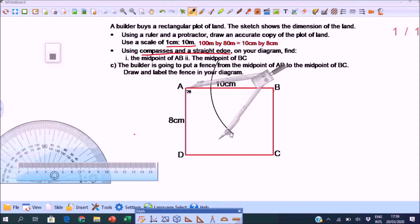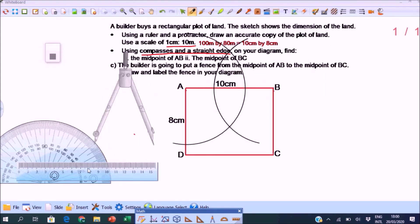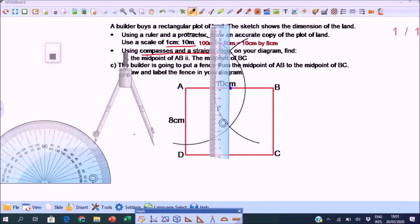Needle on A. Keep the compass radius the same. Draw large arc. The first arc was not long enough. Now use the straight edge. That is the midpoint of AB.